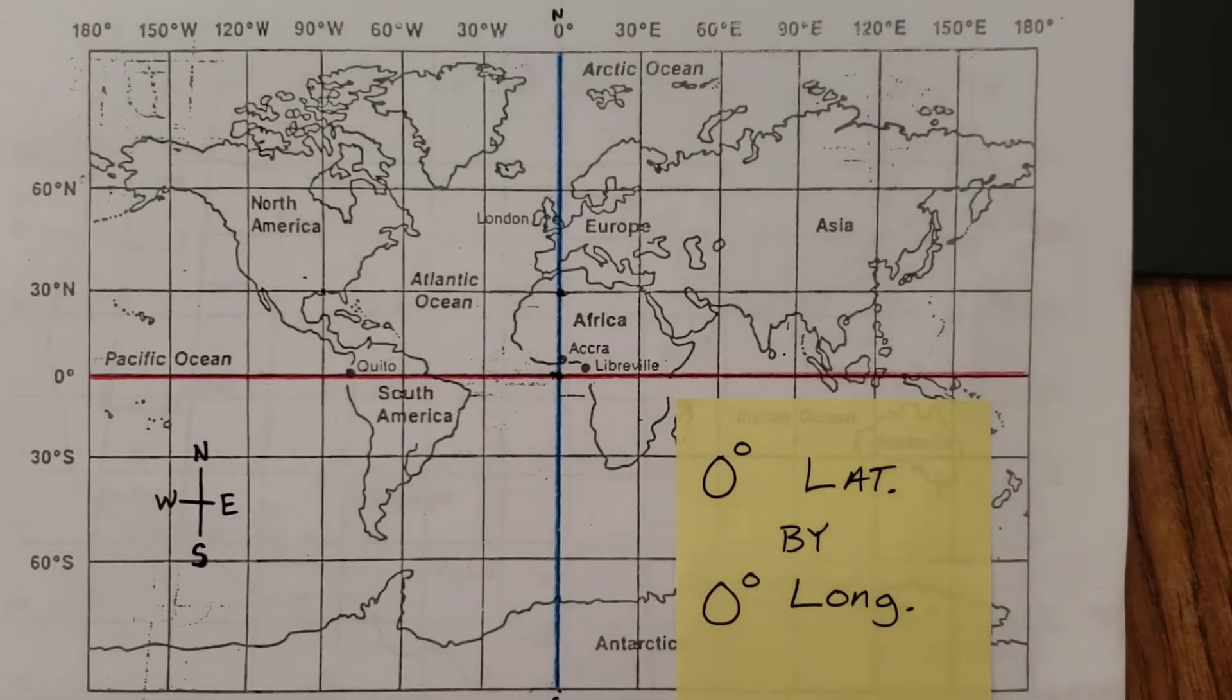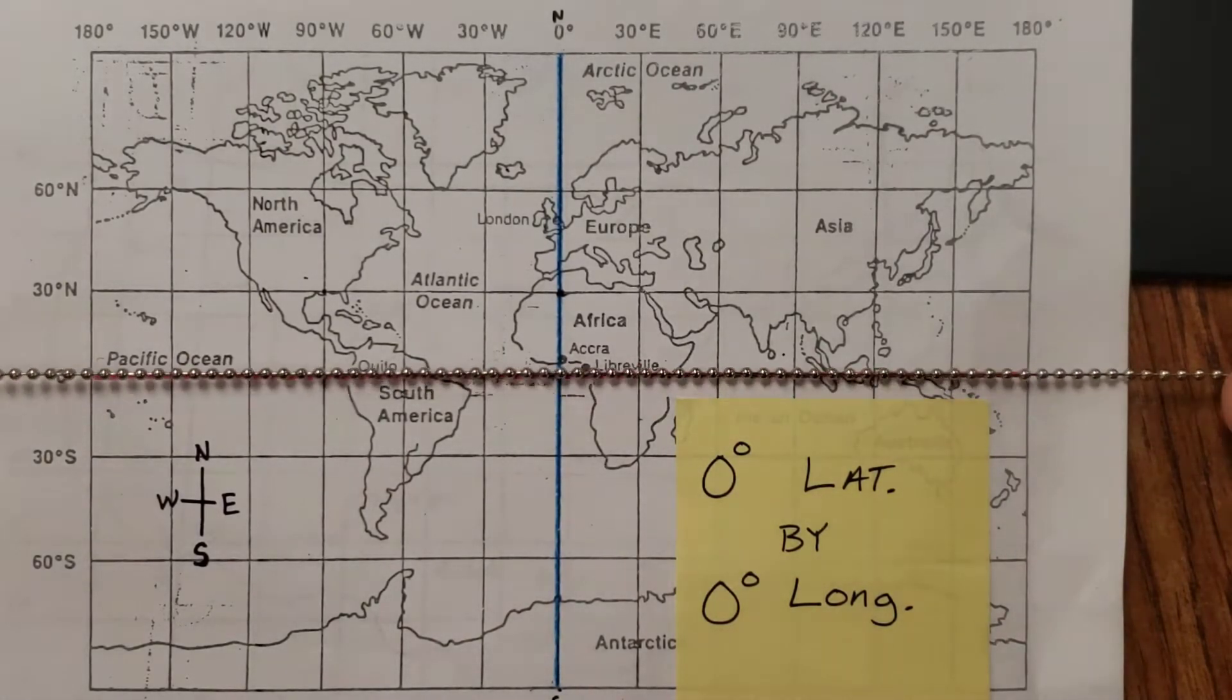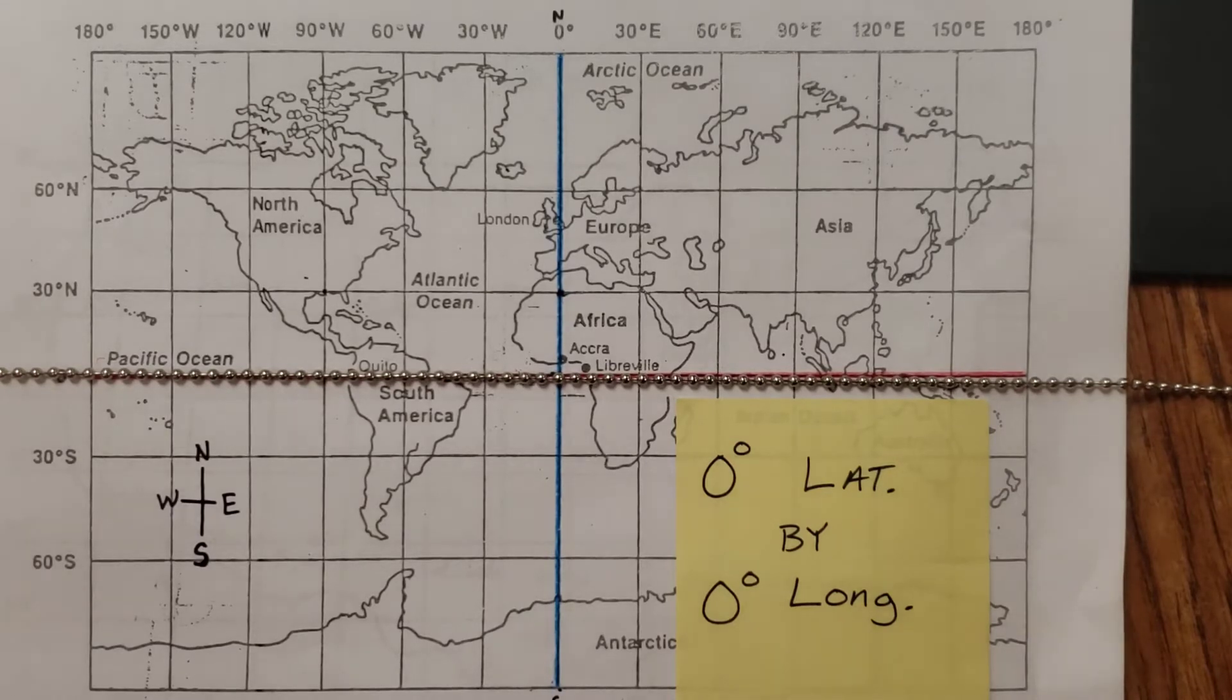All right, I have highlighted the equator. The equator is a line of latitude. It is zero degrees latitude. I'm going to lay this metal chain over it.